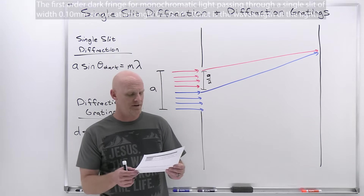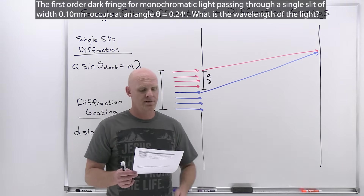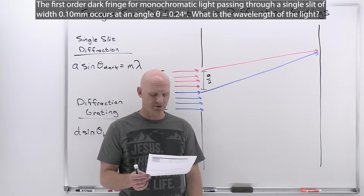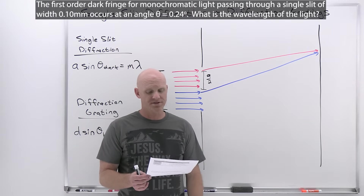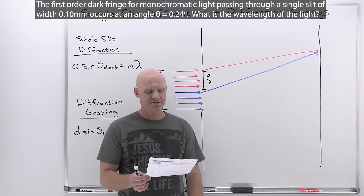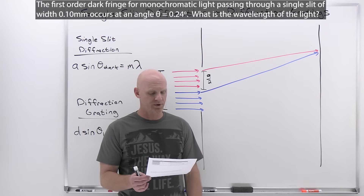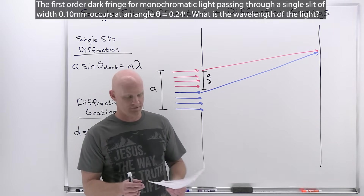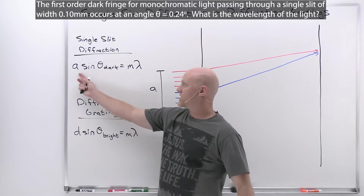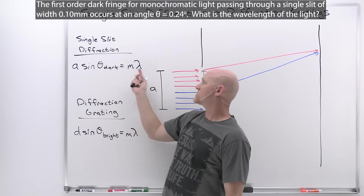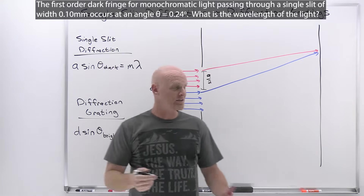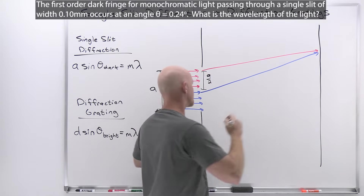The question we're going to solve says: the first-order dark fringe for monochromatic light passing through a single slit of width 0.10 millimeters occurs at angle theta equal to 0.24 degrees. What is the wavelength of light? We're given the slit width and the angle, and told the order is 1, so we just solve for lambda — straightforward plug and chug.